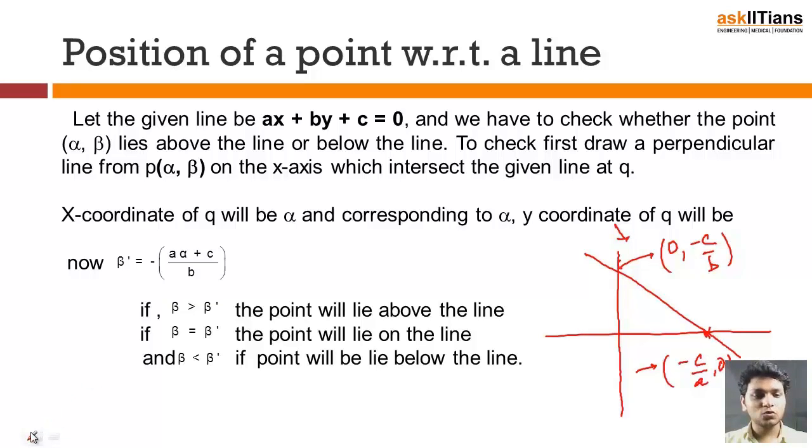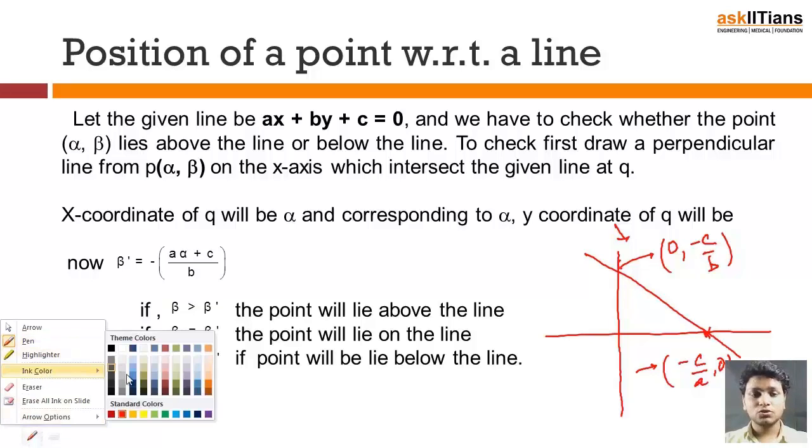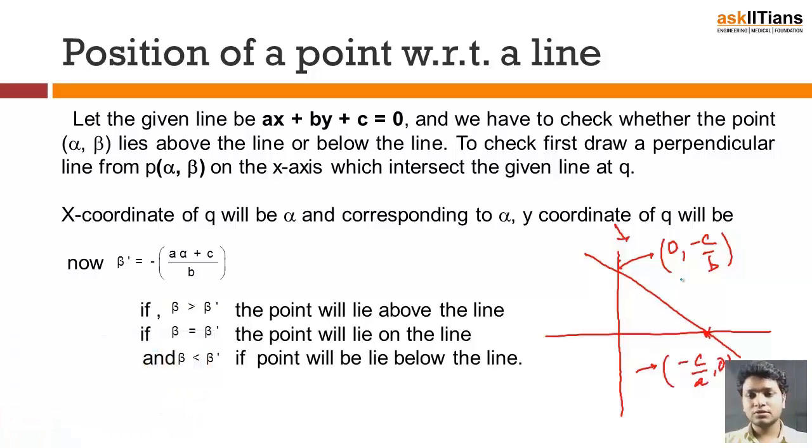Now we have a point alpha and beta whose position we have to check. For that what we have to do is we will take the point, suppose point P alpha beta is over here, so we'll draw a line perpendicular on the x-axis.